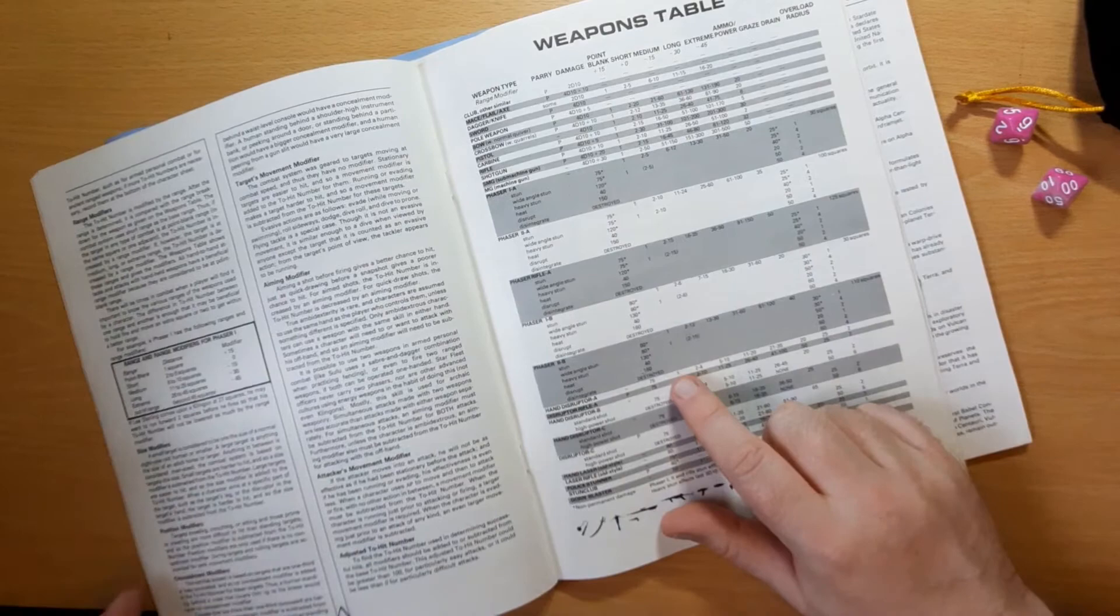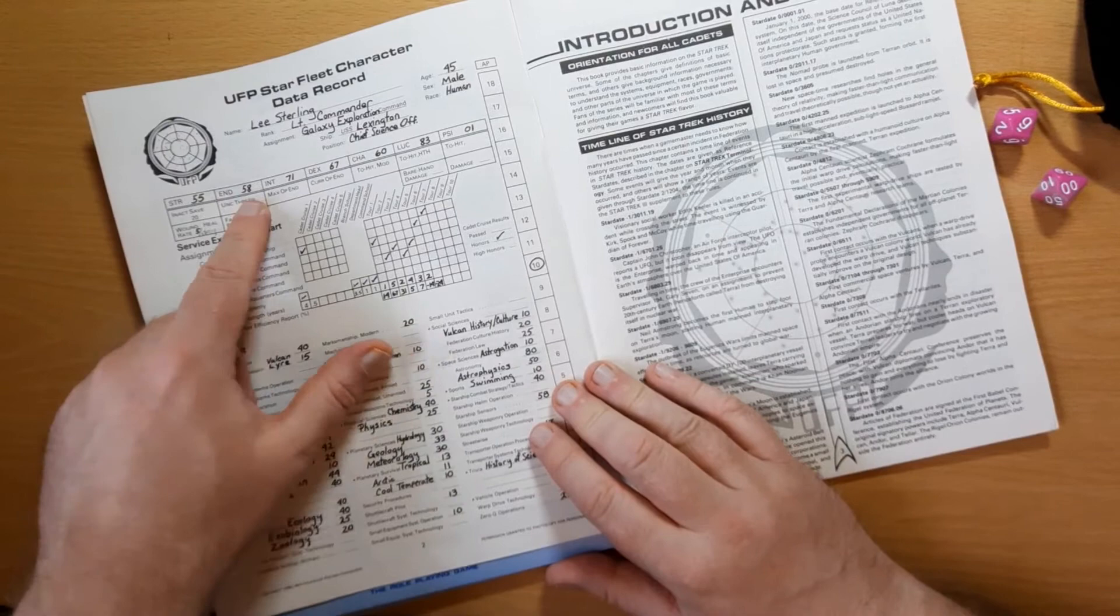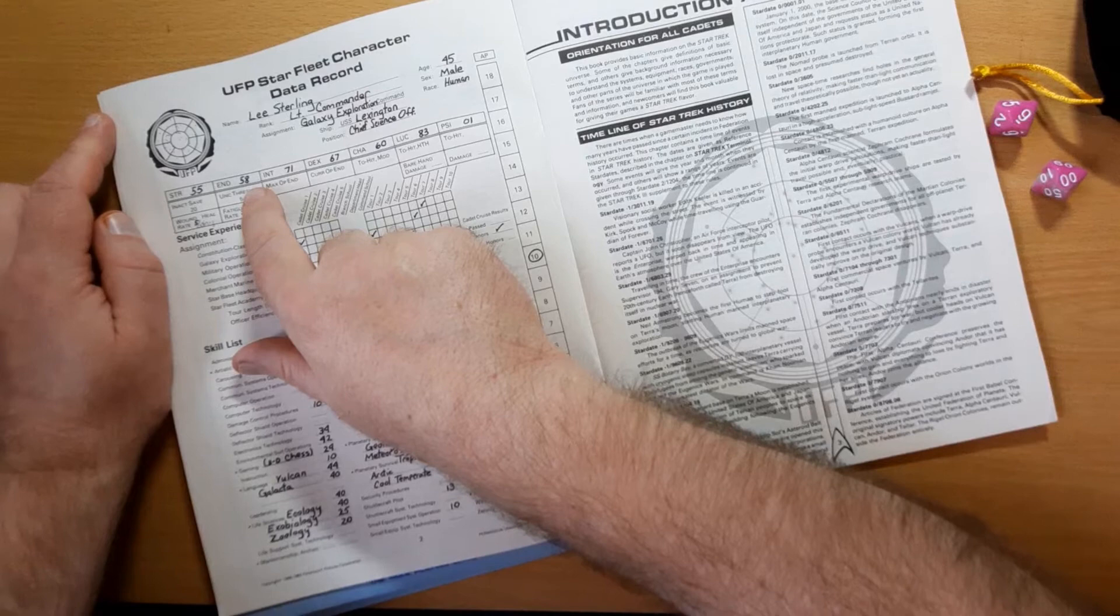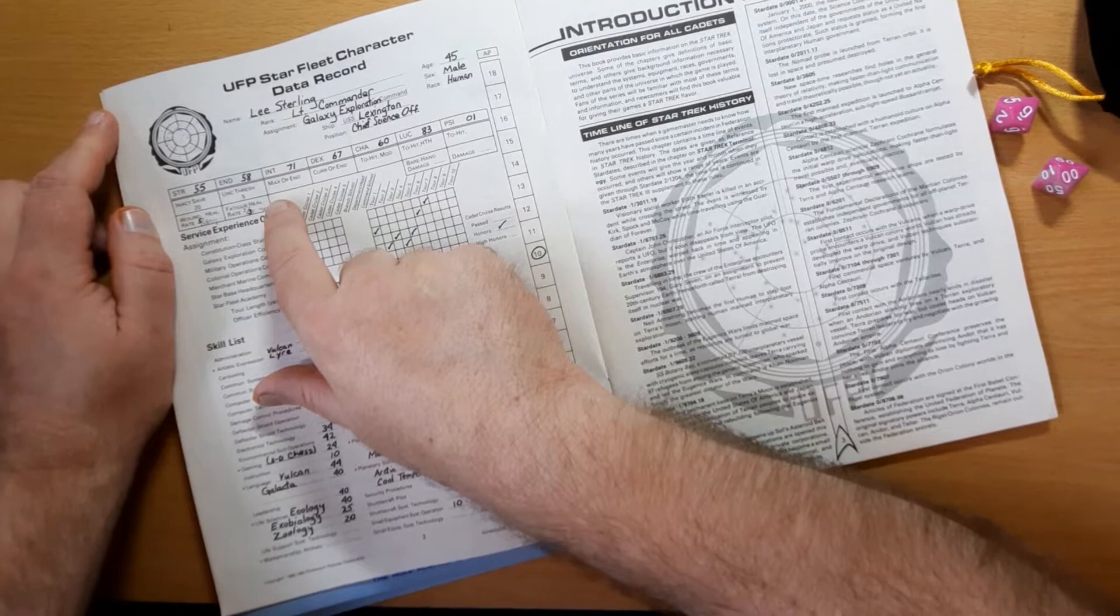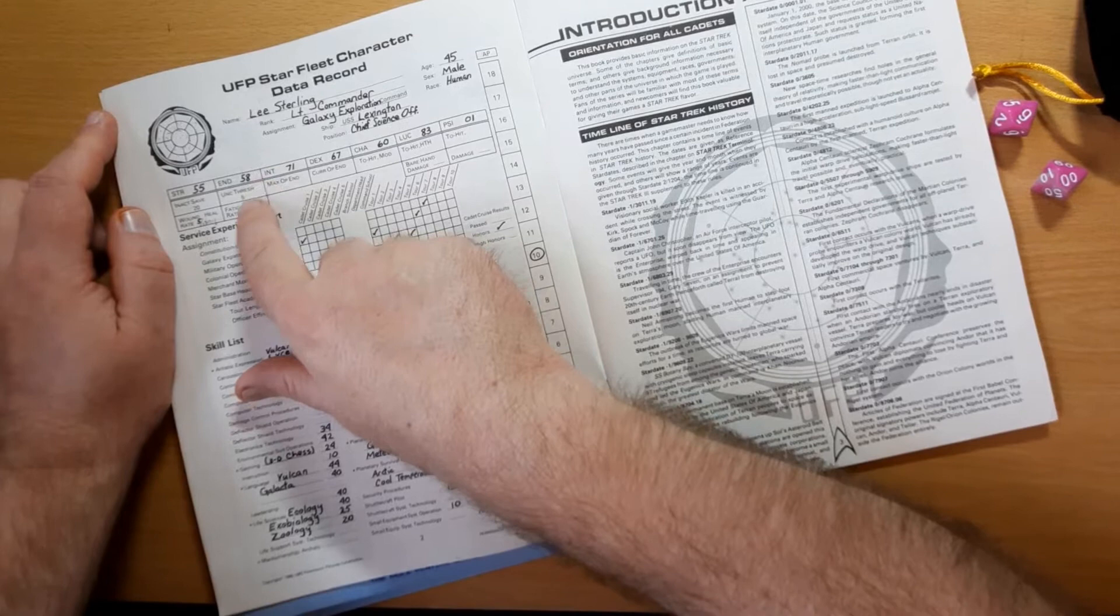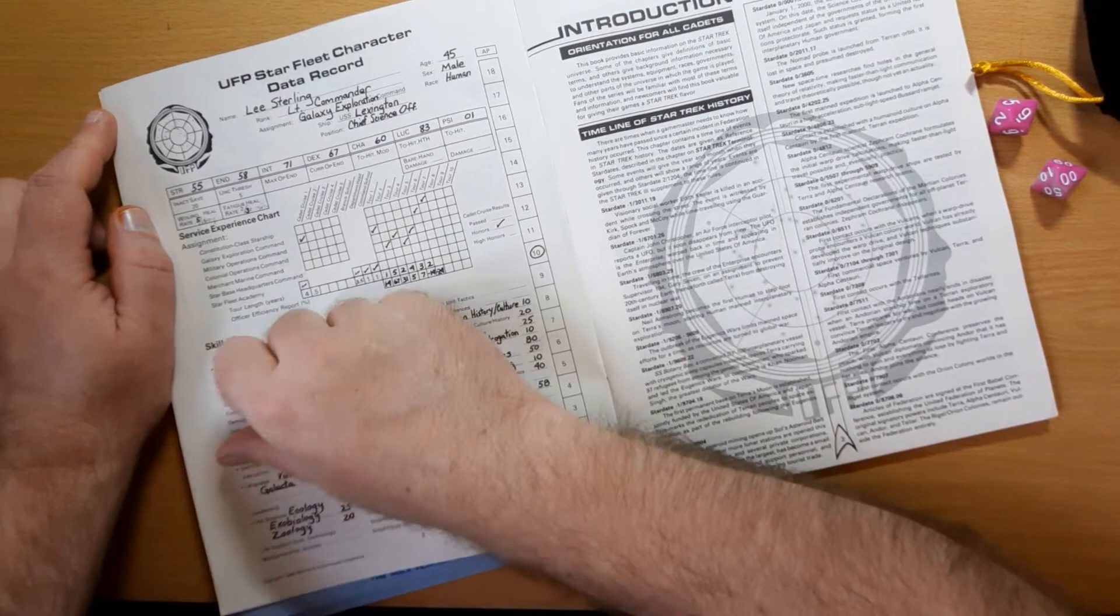Once you determine the amount of damage you're doing, you then have to apply it. Characters in Star Trek use their endurance as their hit points. So Lee here has 58 hits. But when he reaches 20, so he loses 38 of his hit points, he collapses. He is now knocked off his feet and can drag himself by a nearby rock and continue firing, but he has been injured. When he reaches 5, he collapses unconscious. And reaching 0 will kill him, unless of course the damage is stun damage.